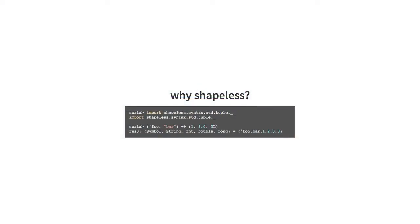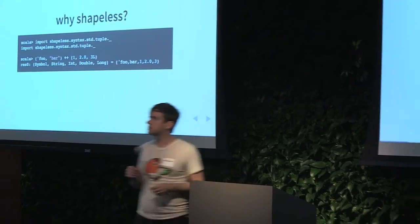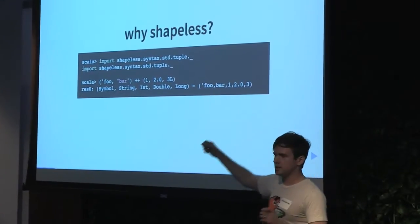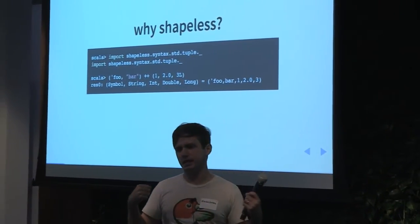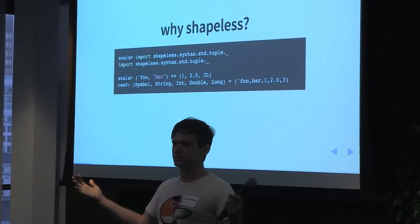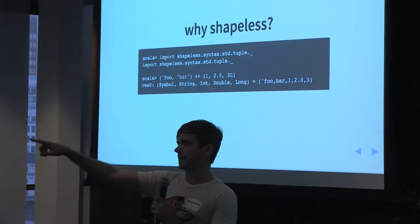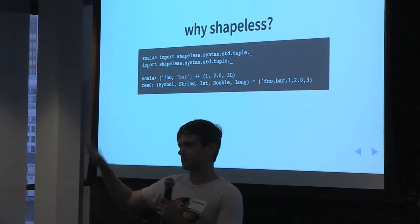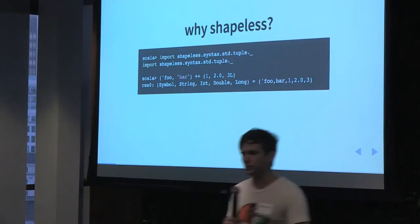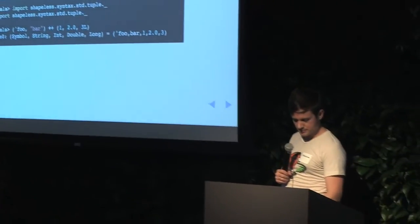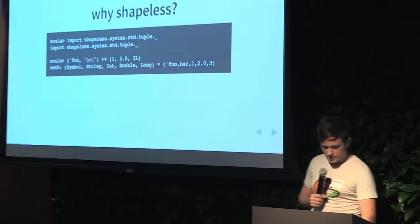Here's all you need to do if you have a Shapeless dependency to add two tuples together. We've got a tuple of a symbol and a string, then a tuple of some numbers. We use this `++` operator that Shapeless provides and we get a tuple of five things. In the REPL, the static type of the result is exactly what we want. This is entirely type safe — we're never going to get any kind of runtime error working with these operators.